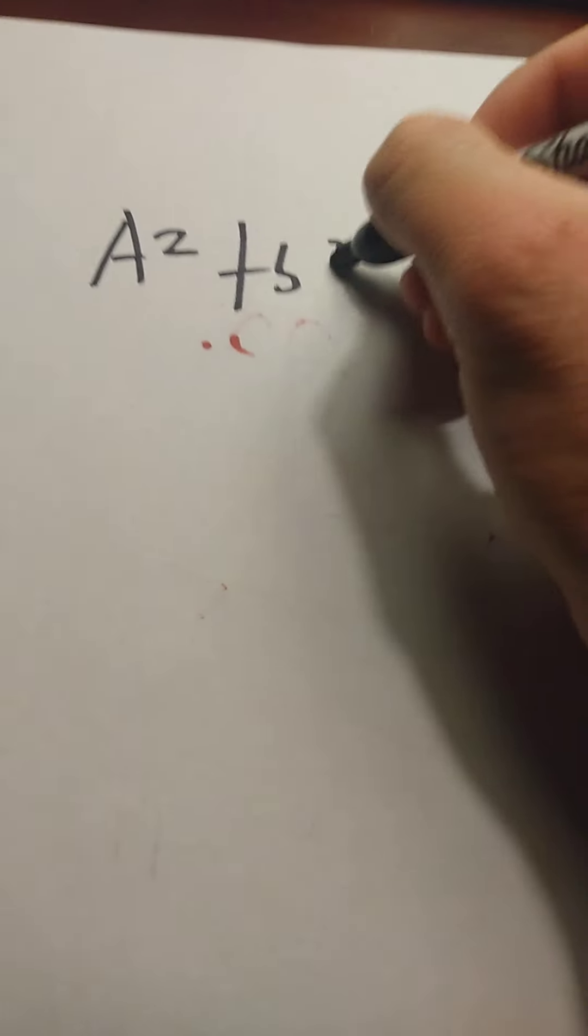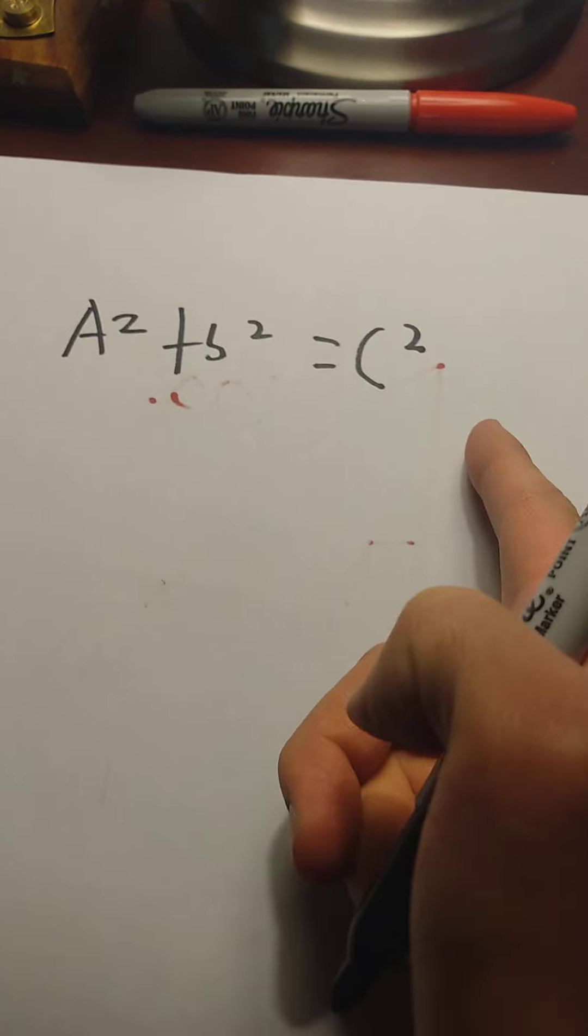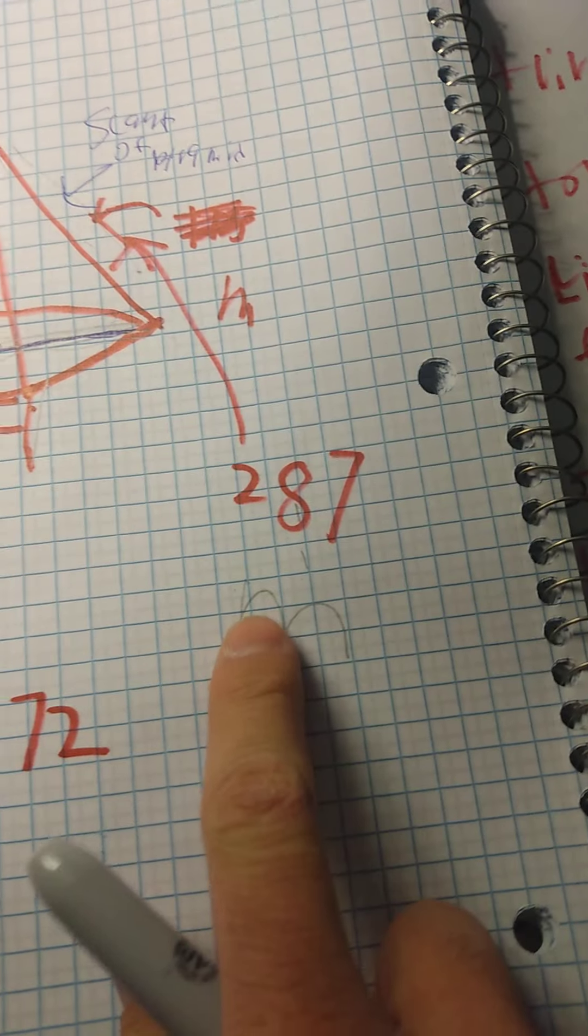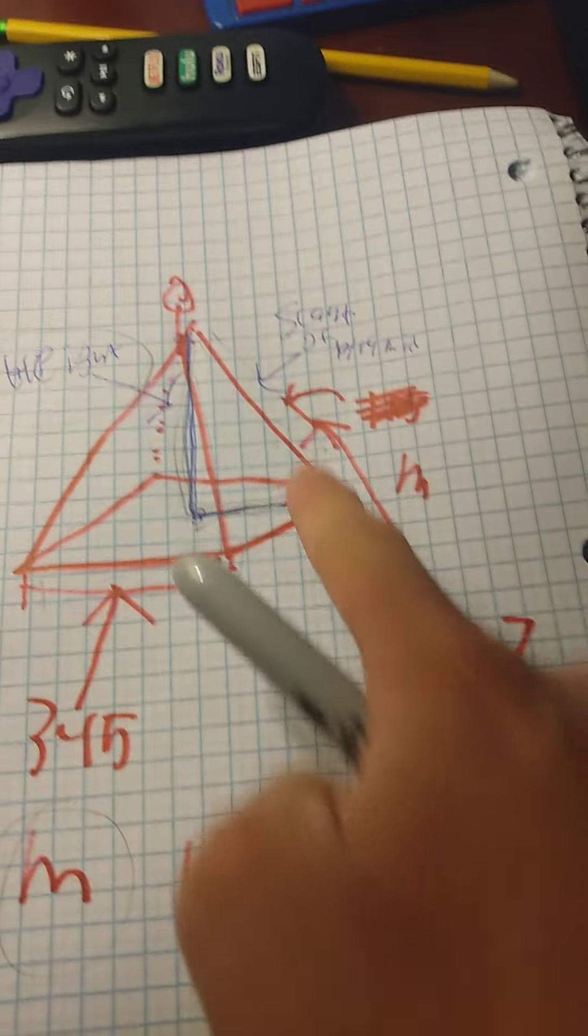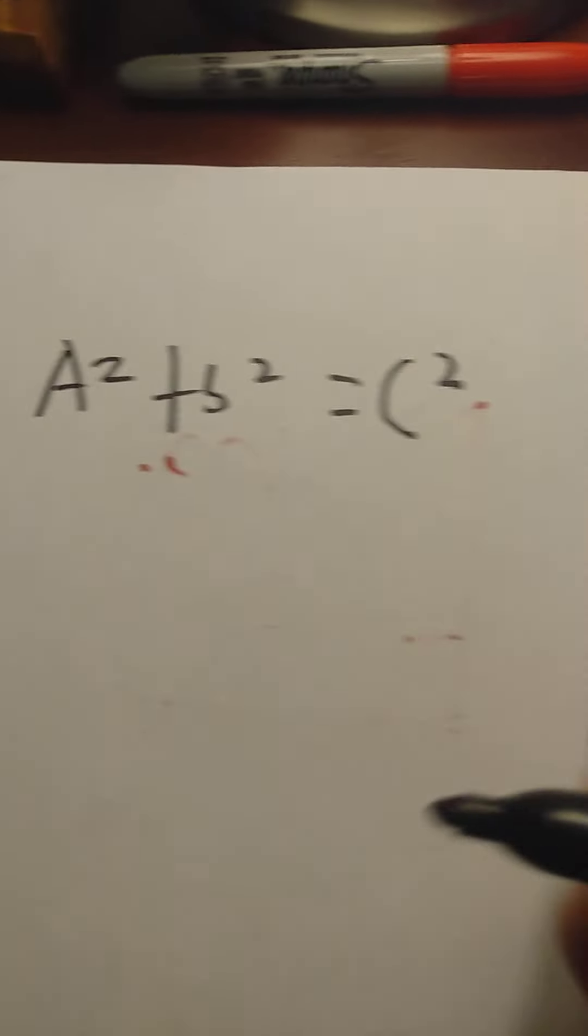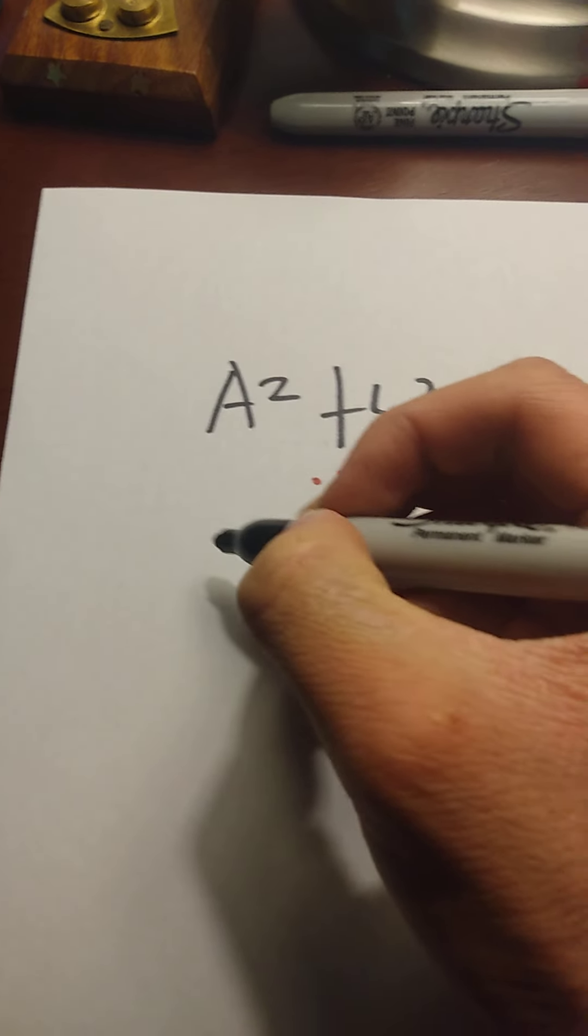For Pythagorean theorem, the formula is a squared plus b squared equals c squared, the hypotenuse. The thing is, with this, the hypotenuse is already measured. We want to know the height.